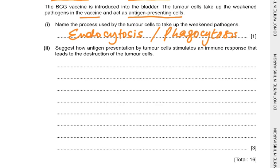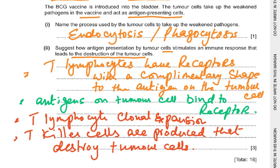Suggest how antigen presentation by tumour cells stimulates an immune response that destroys them: some T lymphocytes have receptors with a complementary shape to the antigen on the tumour cell. Antigens on the tumour cell surface bind to these receptors; T lymphocytes divide by mitosis (clonal expansion), and T killer cells are produced that destroy the tumour cells. B lymphocytes may also produce antibodies, or phagocytosis of cancer cells may occur.